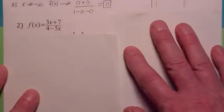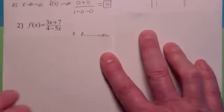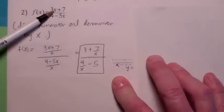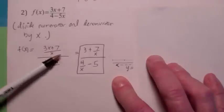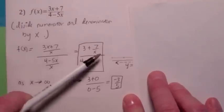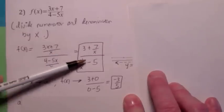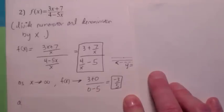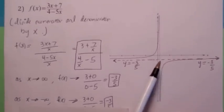Second example: suppose they have the same degree. We said there should be a horizontal asymptote at negative 3 fifths — that's 3 over negative 5. Divide top and bottom by x: 3x plus 7 divided by x, and 4 minus 5x divided by x. You get 3 plus 7 over x on top, and 4 over x minus 5 on the bottom. As x gets big positive, the 7 over x term goes to 0 and the 4 over x term goes to 0, so you're left with 3 over negative 5 — getting close to negative 3 fifths. The graph has a horizontal asymptote at negative 3 fifths.